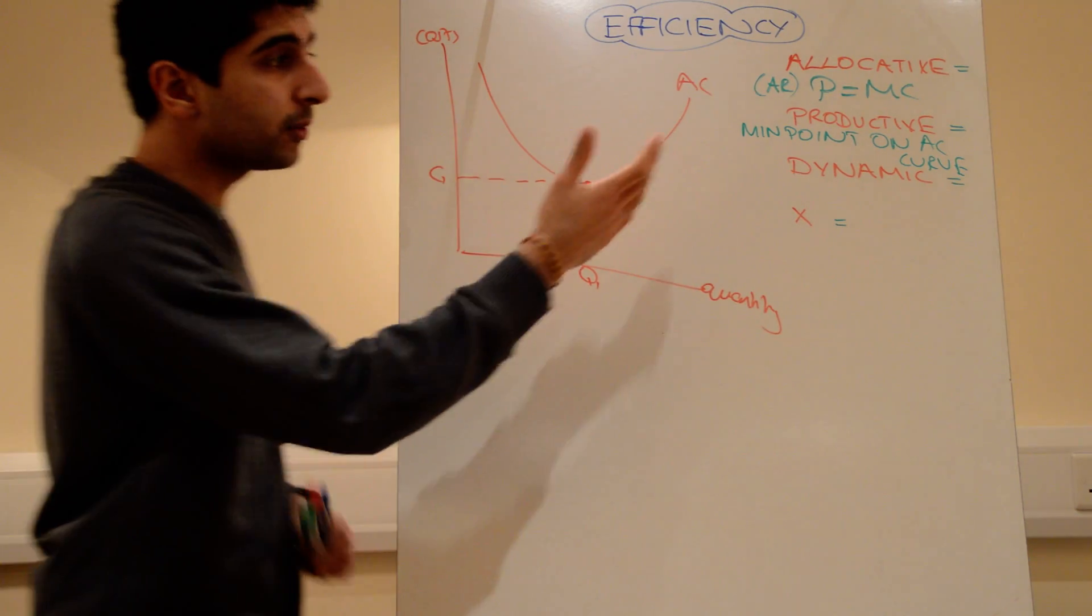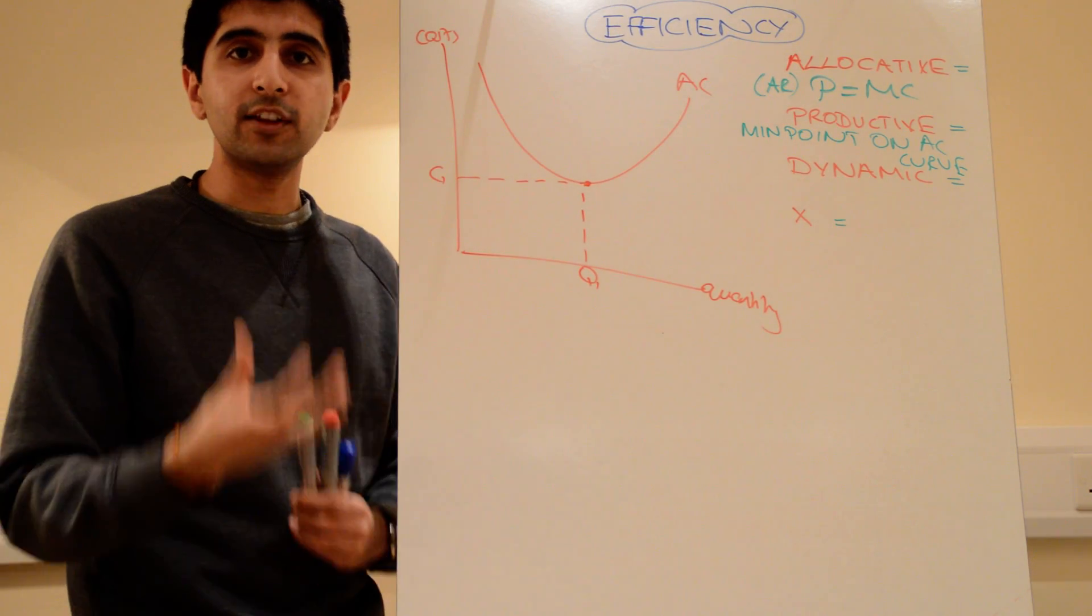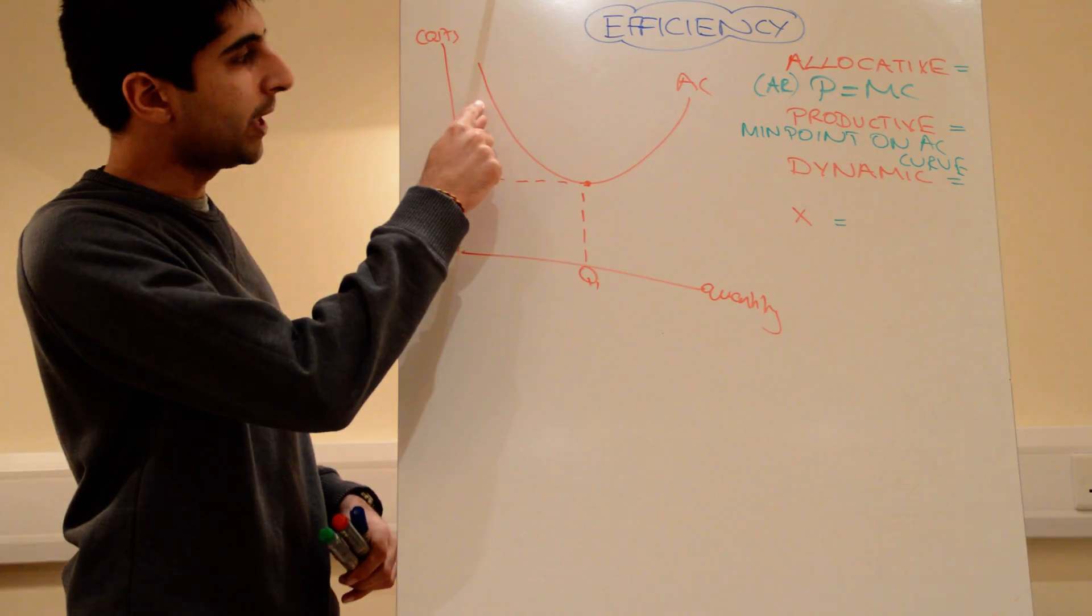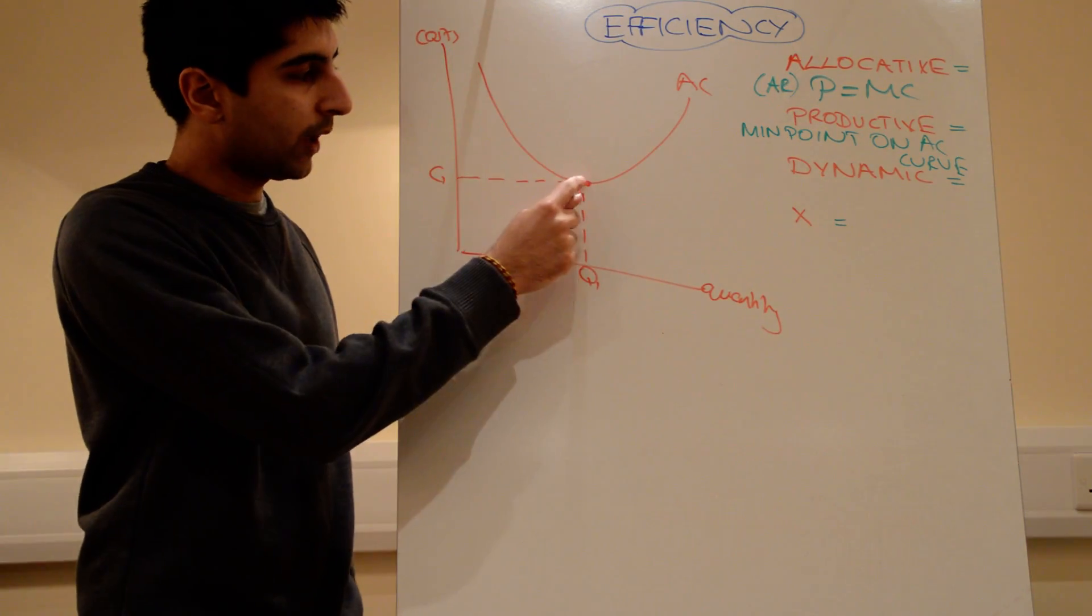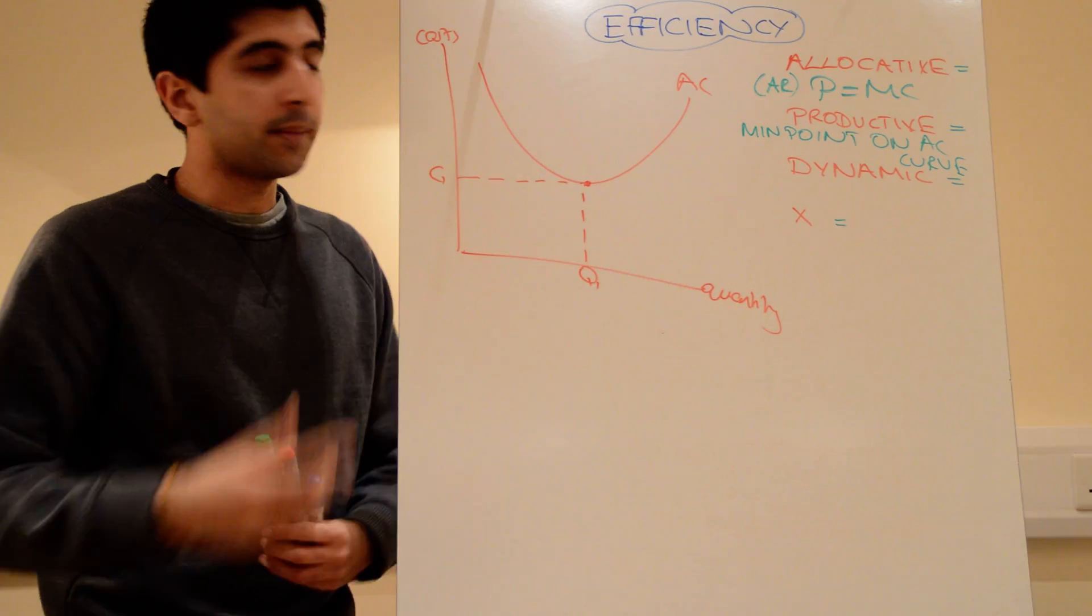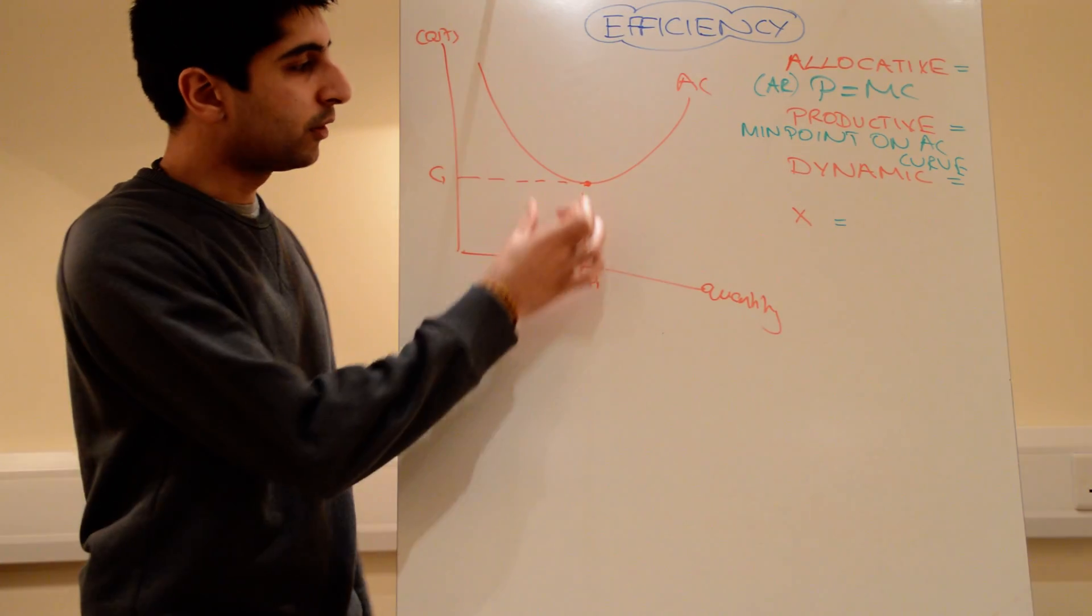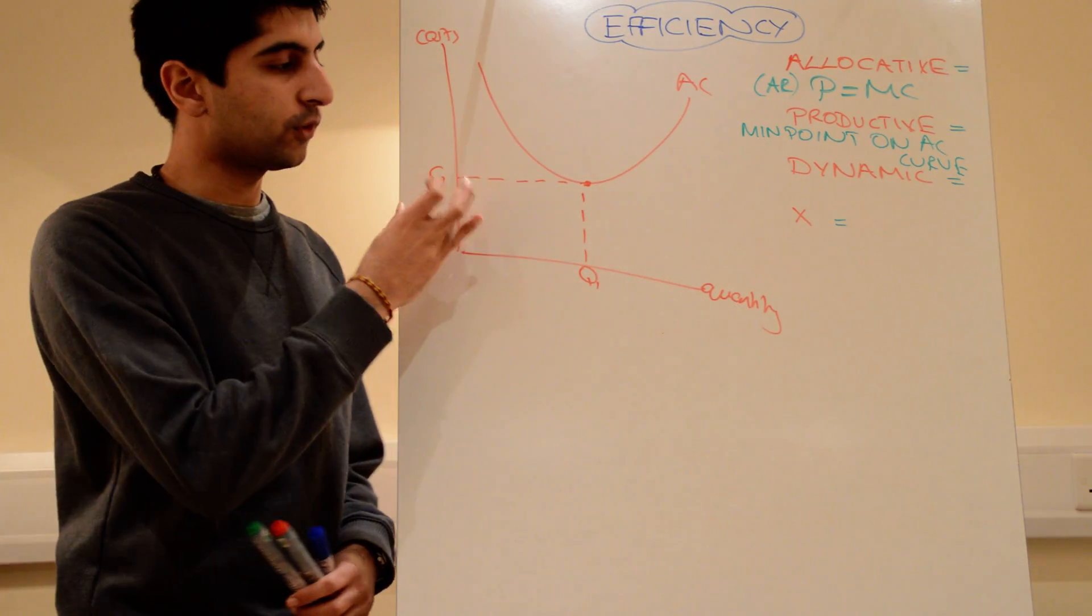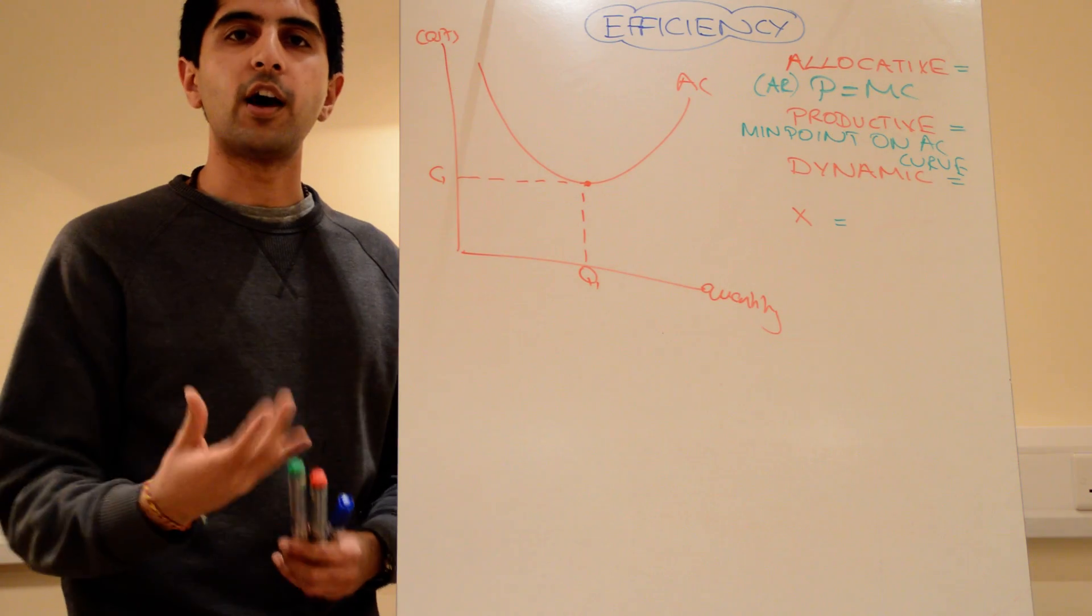That could also be very good for consumers because it might lead to lower prices. If firms are fully exploiting economy of scale, instead of being up here on the average cost curve, they're way down here, that means they have lower costs, they might pass on those lower costs to consumers. So, productive efficiency is also potentially good for the consumer if those lower costs are passed on via lower prices.